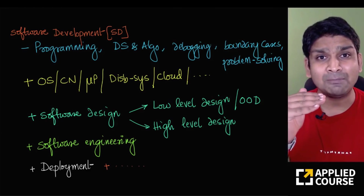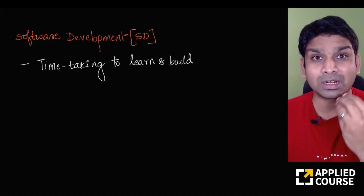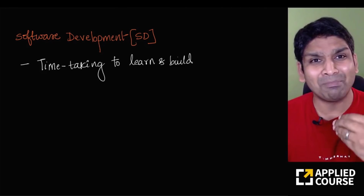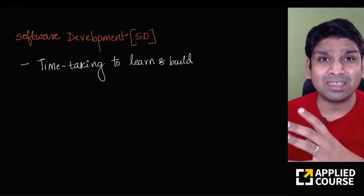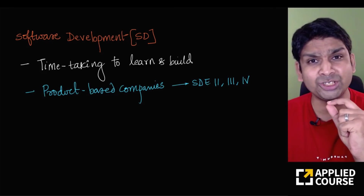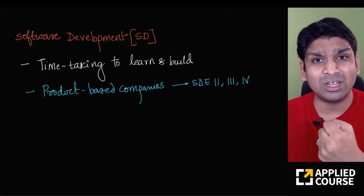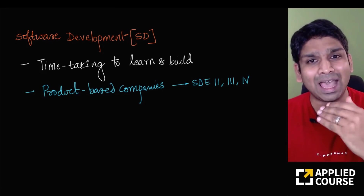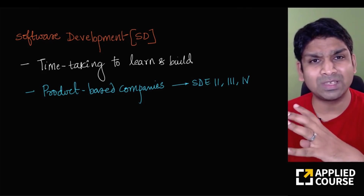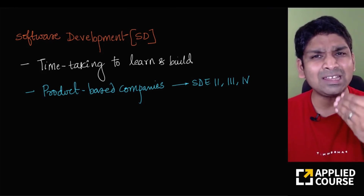Good software developers require all the skills from competitive programming plus additional skills — that's very important. Building decent software for a reasonably complex problem takes time and a lot of learning that you only get by getting your hands dirty. In top product-based companies, for SDE 2, 3, and 4 roles, there is a lot of focus on system design, low-level design, and software development, because as you become a senior engineer, people expect you to go beyond basic data structures and algorithms.